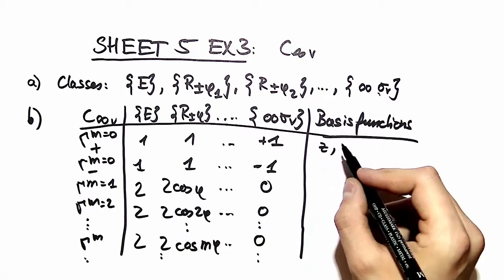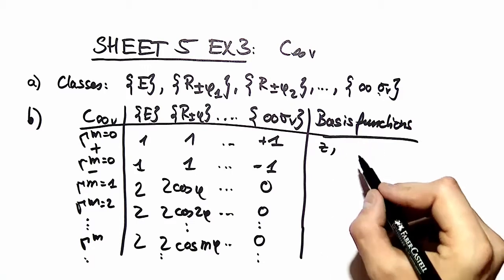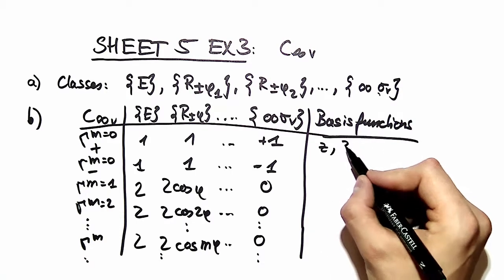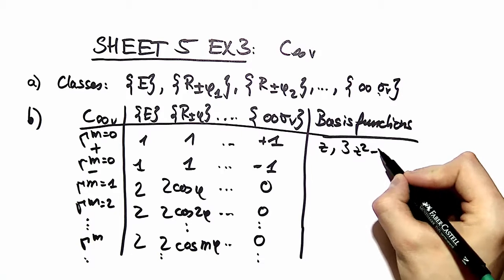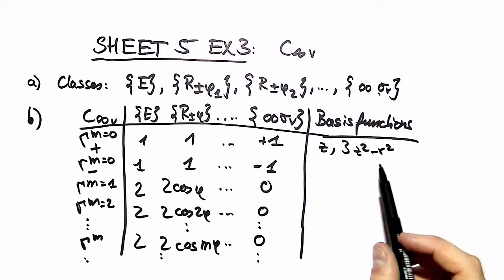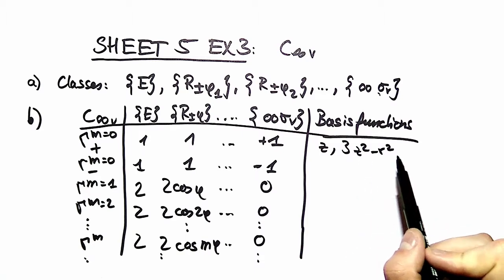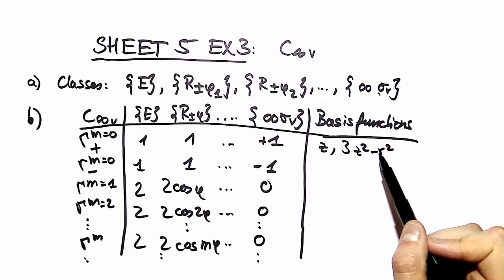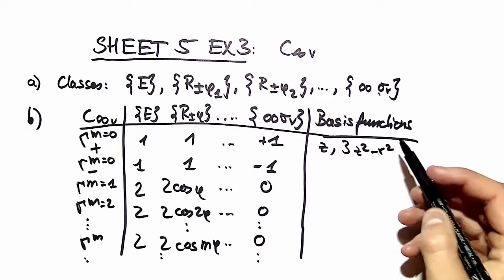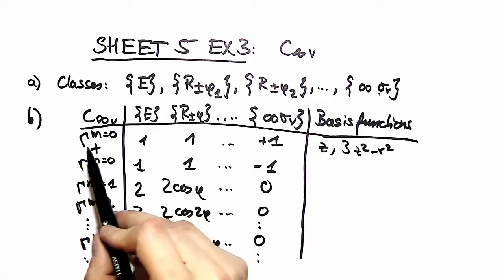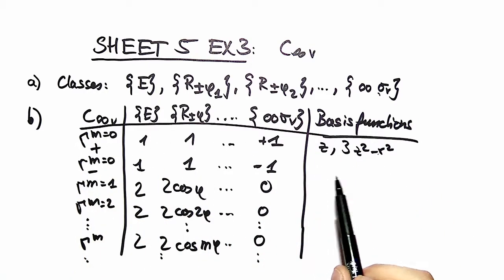Also, a good basis function which is left invariant under any rotation, any reflection, is one containing z's and r squared. So these are basis functions for our identity representation.